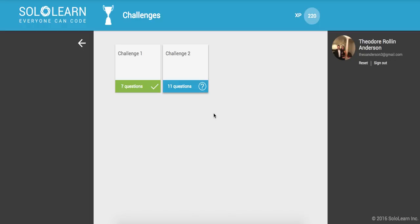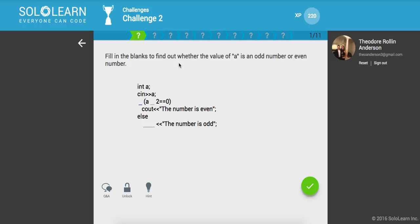Yo, what's up guys? This is Theo here. Welcome back to Introduction to C++ Part 49. So we're going to be working on Challenge 2. Fill in the blanks to find out whether the value of A is an odd number or an even number.